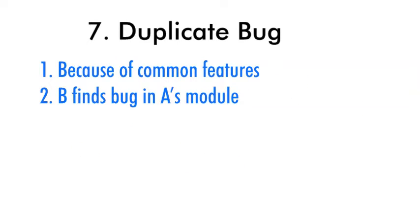Duplicate bugs are another rejection reason. For example, if the same search feature exists in two modules and the developer copied the same code to another module, two test engineers testing different modules but the same feature may find the same bugs. The developer can say the bug is a duplicate. Similarly, if a second test engineer enters another engineer's module and reports a bug already found there, the developer can reject it as a duplicate.